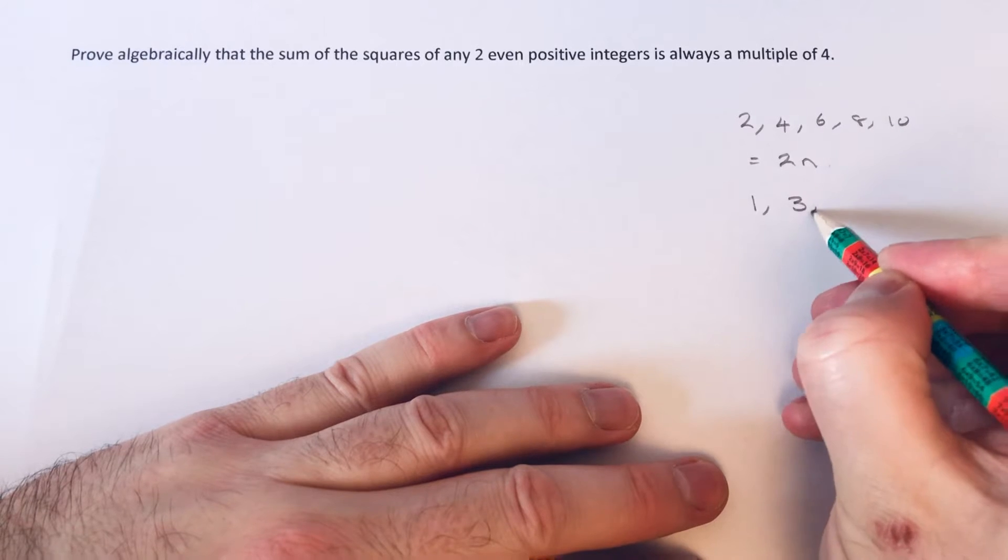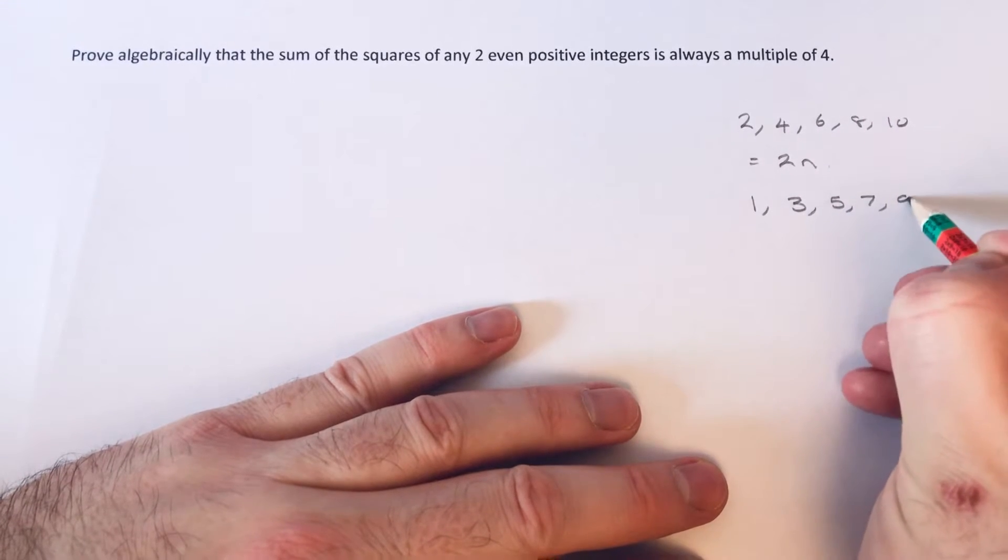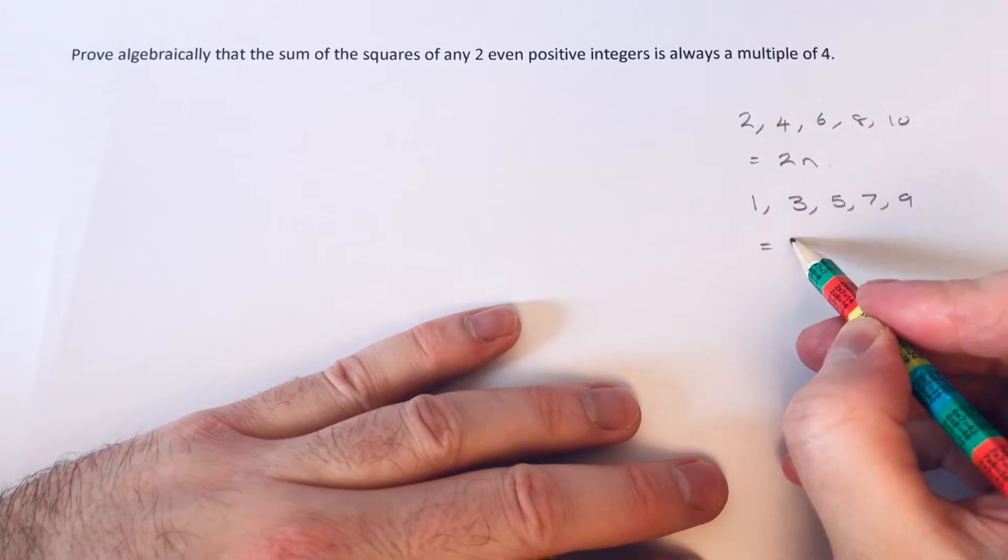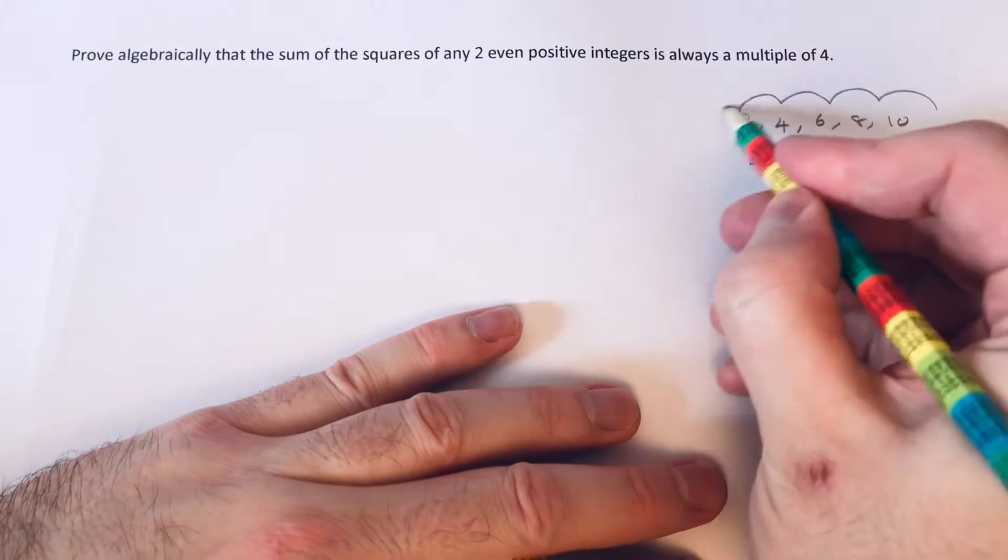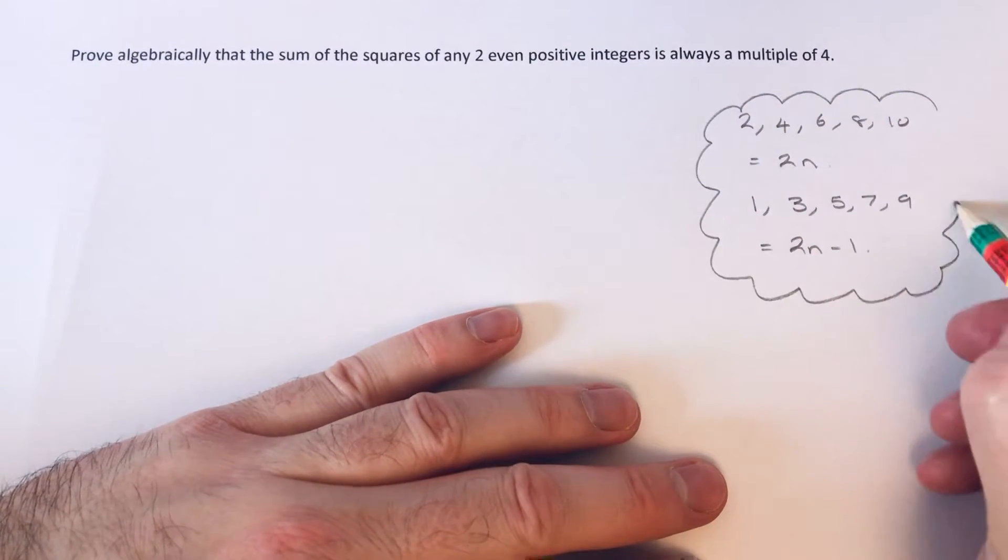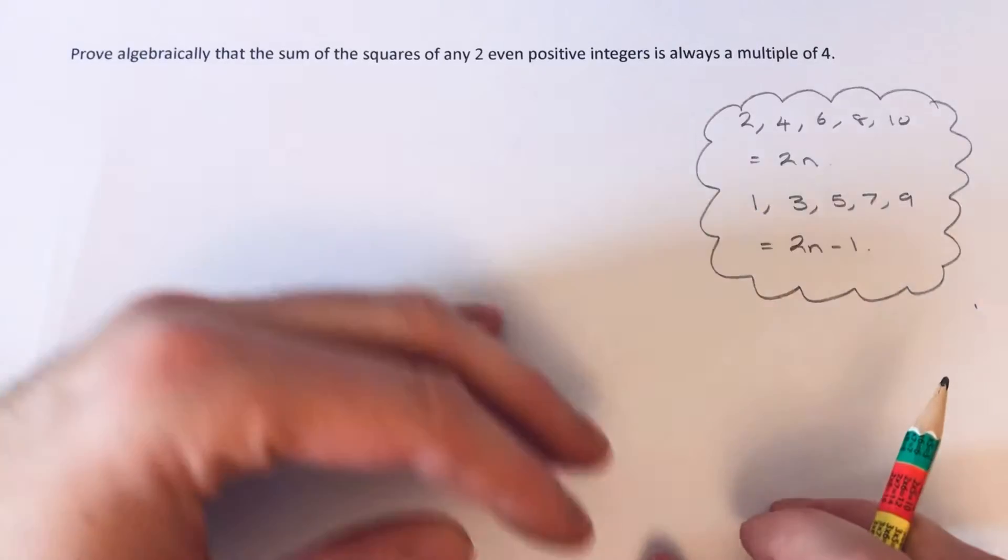And the odd number sequence 1, 3, 5, 7, 9 has an nth term of 2n minus 1. So you'll probably find these useful when we do these types of proofs.